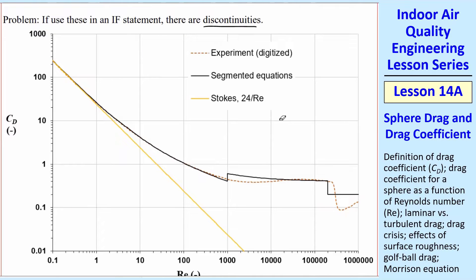The segmented equations is this black line. Digitized experiments follow that dashed line. Stokes flow, the 24 over Reynolds number, is this orange line. What I wanted to point out was there's a discontinuity at 5 right here. You can barely see that one. That's not a very large discontinuity, but the 1 and 1,000 is huge. This is a discontinuity. There's another one if you stop at 2 times 10 to the 5th, and then you make it 0.2 from then on. So it follows the data fairly well, but there's these discontinuities. And what happens is you can get into infinite loops where you're trying to converge on things, and it's bouncing between right after this discontinuity, right before the discontinuity, and it just never will converge. So we had issues.